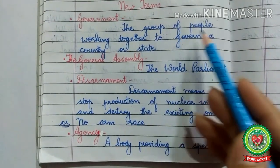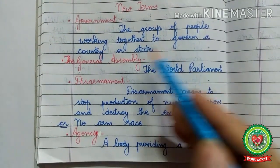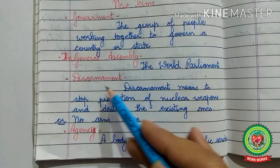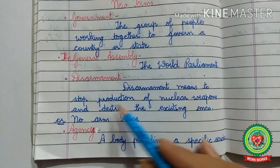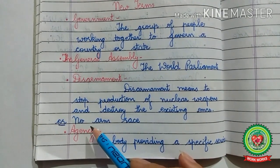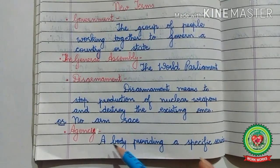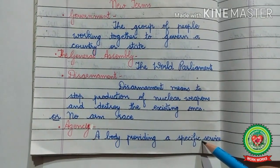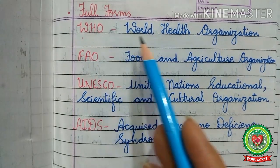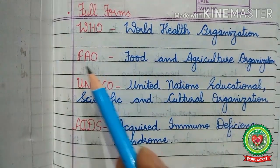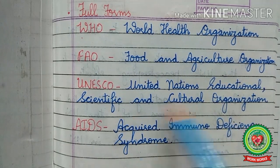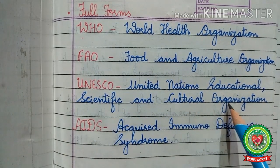New terms related to today's topic: Government — the group of people working together to govern a country or state. The General Assembly — the world parliament. Disarmament — to stop production of nuclear weapons and destroy the existing ones, or in simple words, no arms race. Agency — a body providing a specific service. Full forms: WHO — World Health Organization, FAO — Food and Agriculture Organization, UNESCO — United Nations Educational, Scientific and Cultural Organization, AIDS — Acquired Immunodeficiency Syndrome.